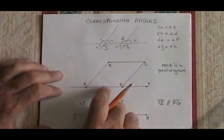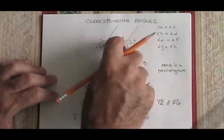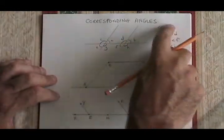So whenever two parallel lines cross the same line, you will have created four sets of corresponding angles.